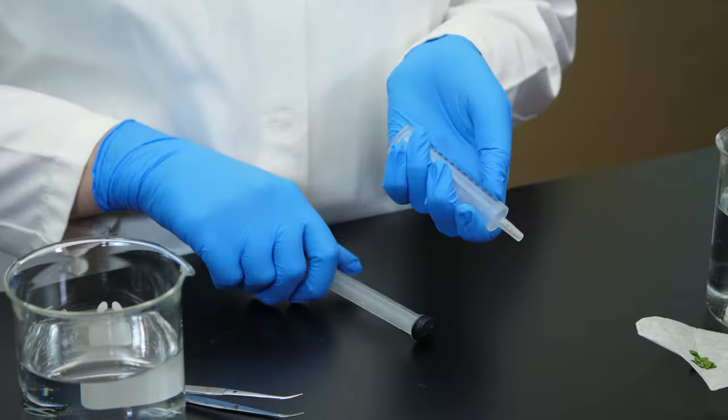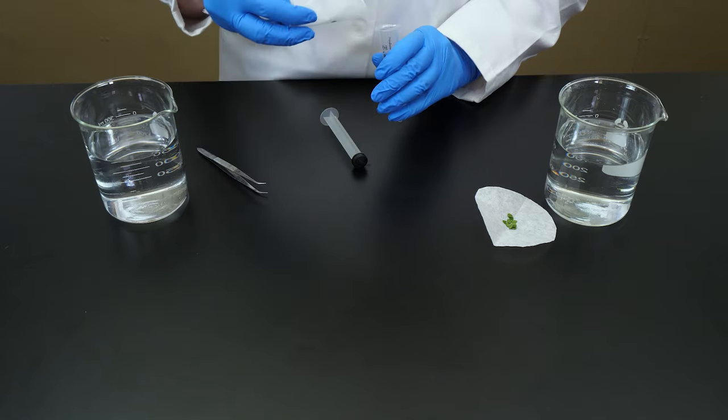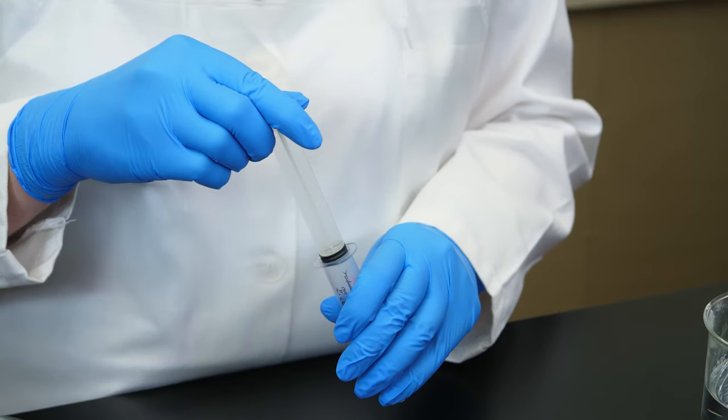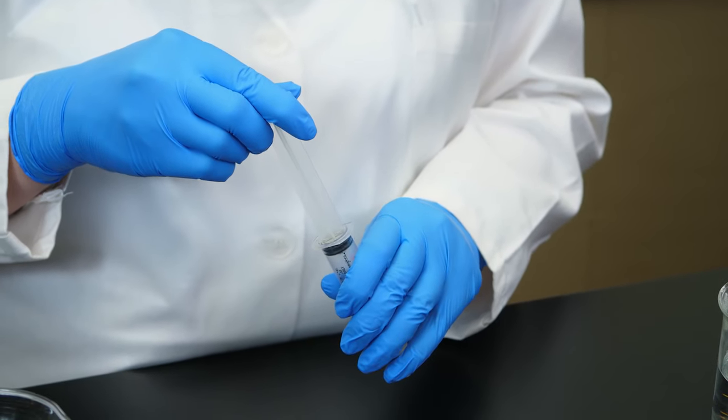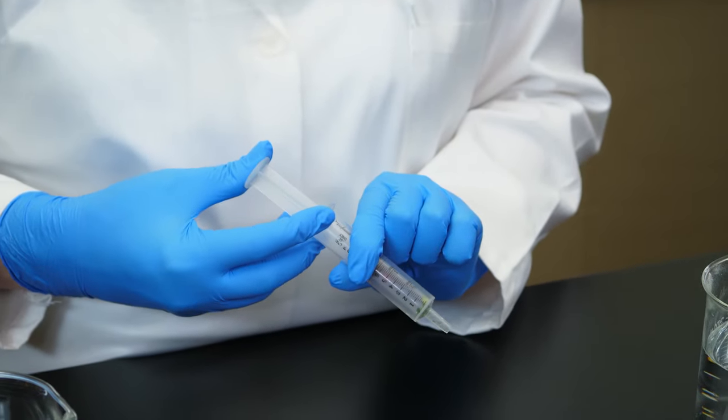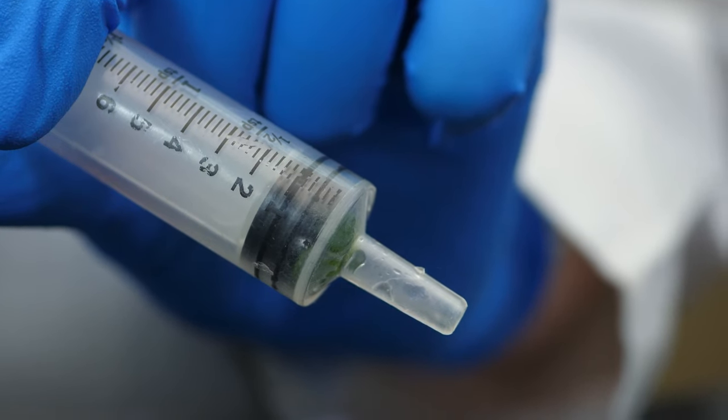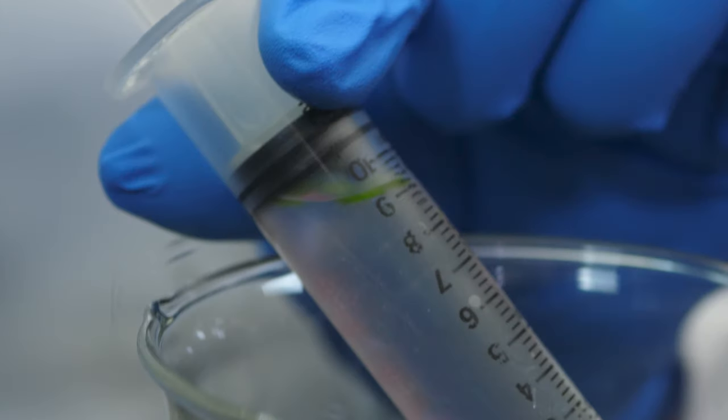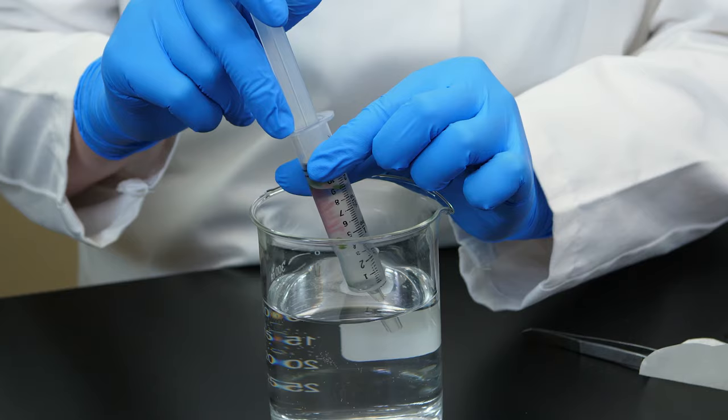Now, we will remove the plunger from a syringe and dump 10 chads into the barrel. Next, we insert the plunger and force as much air as possible out of the syringe by depressing the plunger almost to the bottom of the barrel. We need to draw 10 milliliters of the sodium bicarbonate solution into the syringe from one of the beakers.